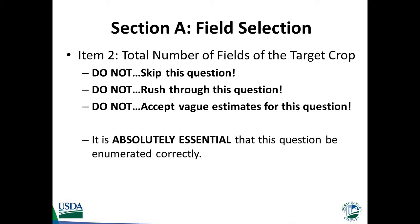In Item 2, you need to collect the total number of fields planted to the target crop. The total number of fields is used to expand field-level data collected on the questionnaire. It is absolutely essential that you do not skip this question, rush through this question, or accept vague estimates. All fields must be accounted for to ensure that the data collected for the selected field are going to be correctly expanded.